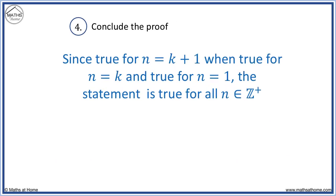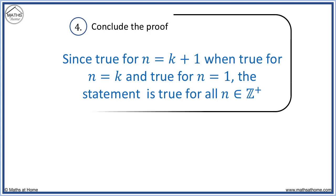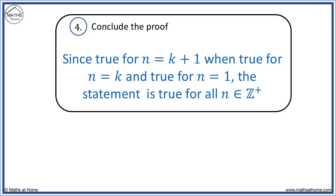We conclude the proof by stating that since it was true for n equals k plus 1 when true for n equals k, and it was also true for n equals 1, this statement is true for all positive integer values of n. We will conclude all proofs with this line.